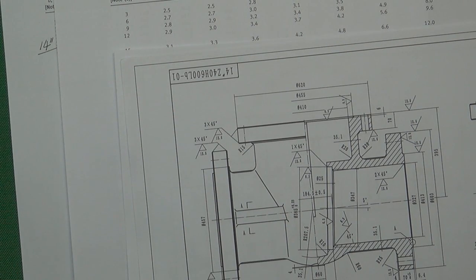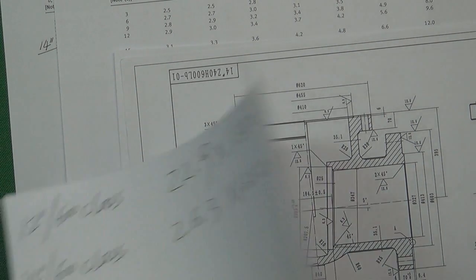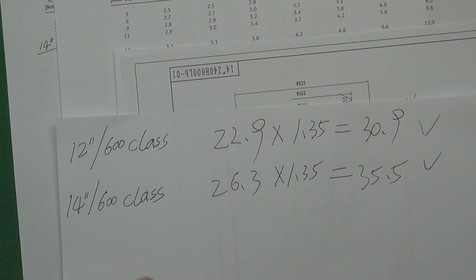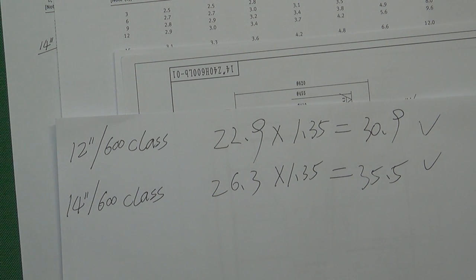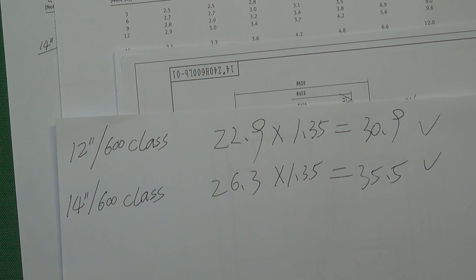They put the safety factor into the minimum wall thickness from the ASME B16.34 table. That's all for today. I hope you already understand. If you like this video, please subscribe. If you have any questions, please leave a comment. Thank you for watching. See you next time. Bye-bye.